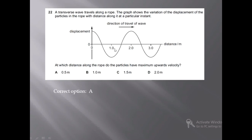We have been given the values of displacement and distance, and we have been shown the direction of travel of the wave. The question asks: at which distance along the rope do the particles have maximum upward velocity?